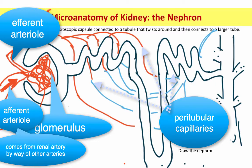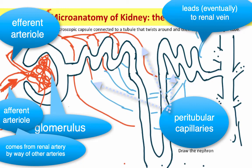The afferent arteriole, if you trace it back far enough, leads to the renal artery. If you follow the peritubular capillaries, you'll come to venules, then arcuate veins and interlobular veins, and eventually the renal vein. When labeling the nephron, don't worry too much about the arcuate and interlobular vessels — just focus on the renal artery, renal vein, afferent arteriole, glomerulus, efferent arteriole, and peritubular capillaries.